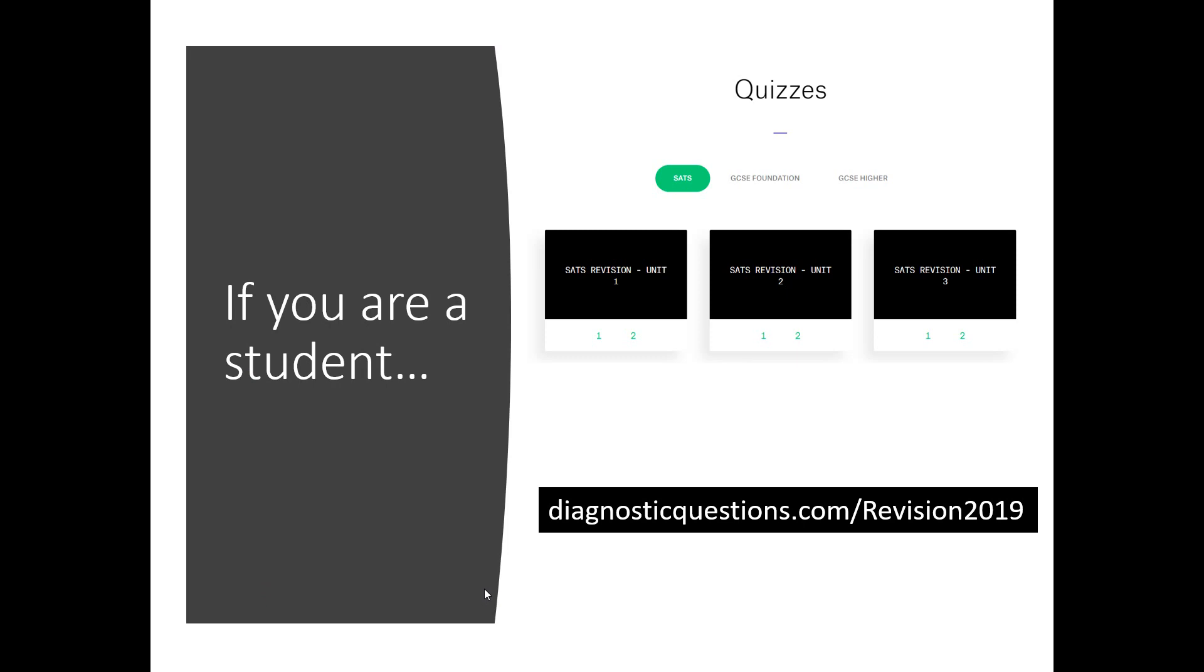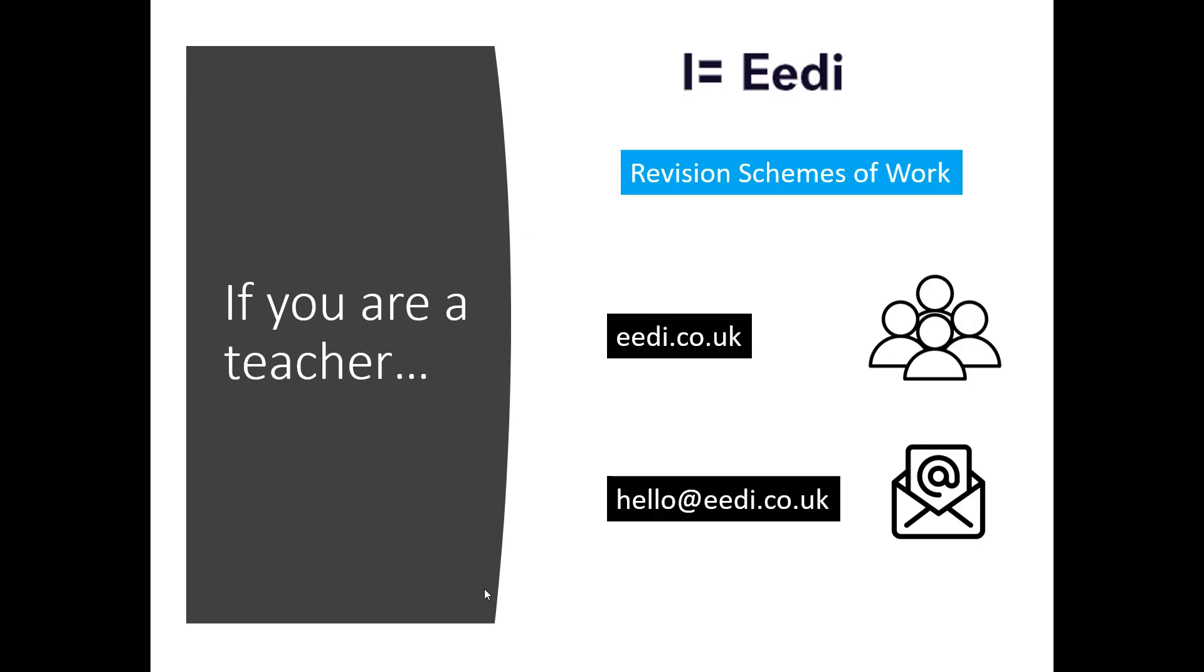If you're interested in trying more of these quizzes out, if you go to diagnosticquestions.com forward slash revision 2019, you'll find 20 of these quizzes. It's a whole host of topics. And you can have a go at those. And if you're a teacher and you're watching this and you want to set your students up on this, if you head over to ed.co.uk, you can set this up as a scheme of work or as individual quizzes and challenge your students on these. It's all completely free. And if you want to get your students registered on the system, drop us an email to hello at ed.co.uk, ideally attaching a spreadsheet with your kids' names and their class names on there. And we can get your students uploaded to the system. As I say, all completely free. And I'll be back with another Beat the Nation soon. Take care and bye for now.